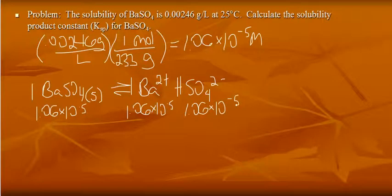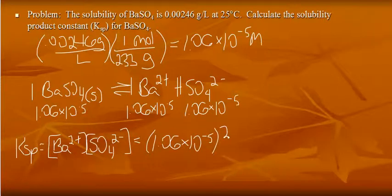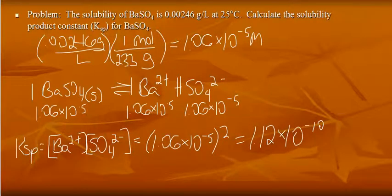And if I want to calculate Ksp, Ksp is equal to the product of the ions, barium times sulfate. And I know the concentrations of barium and sulfate ions. So it's simply 1.06 times 10 to the negative 5th squared. And so Ksp for barium sulfate, 1.12 times 10 to the negative 10th. And no units are associated with Ksp.